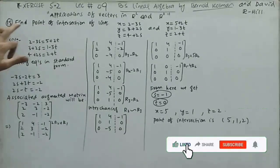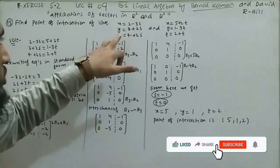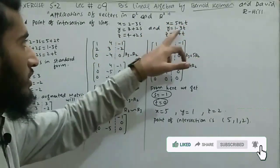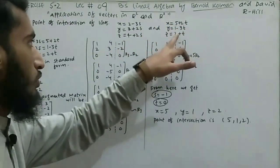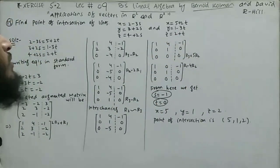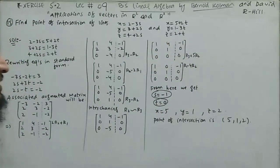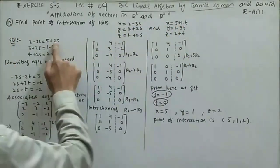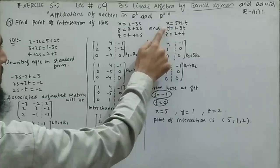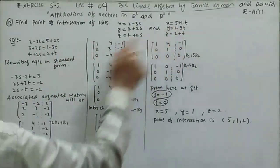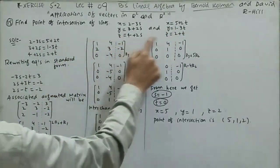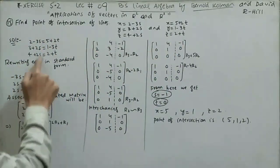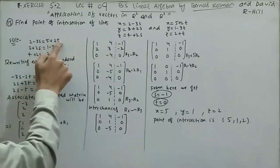Question 15: find the point of intersection of the line x = 2 - 3s, y = 3 + 2s, z = 4 + 2s and the line x = p₀ + 2t, y = 1 - 3t, z = 2 + t. We find the x, y, z values that satisfy both. Setting equations equal: 2 - 3s = p₀ + 2t; 3 + 2s = 1 - 3t; 4 + 2s = 2 + t, generating a linear system.